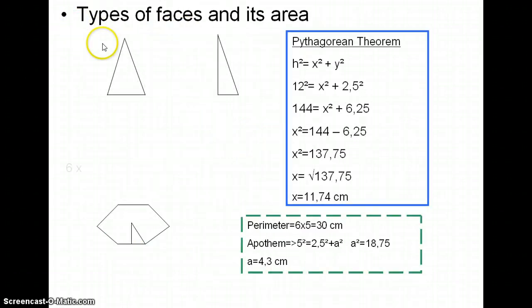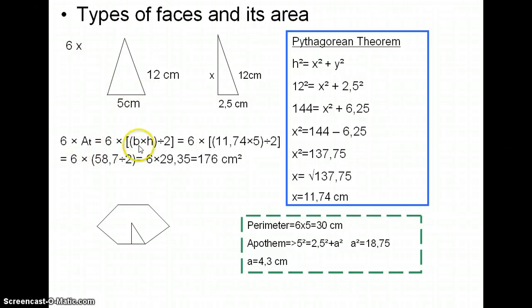Next, types of faces and its area. We have six isosceles triangles with 12 centimeters on this side and five centimeters long. To figure out the area of the triangle, we must know the base and the height. So we know the base, but we don't know the height. So to discover the height, we must do the Pythagorean theorem.